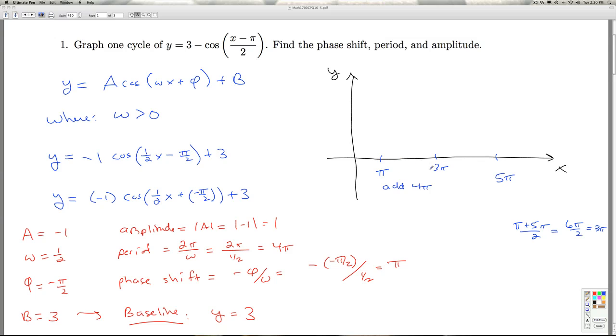And now I average these two. Pi plus 3 pi over 2 is 4 pi over 2, which is 2 pi. That gives me the number in the middle here.